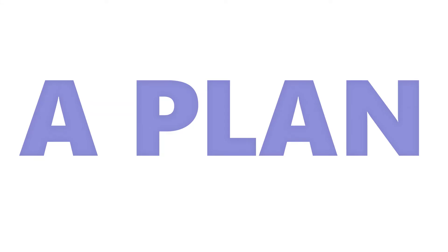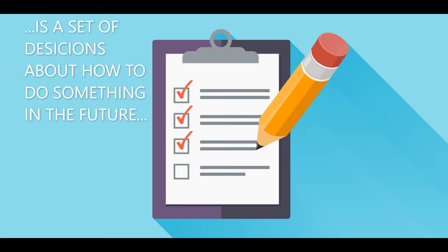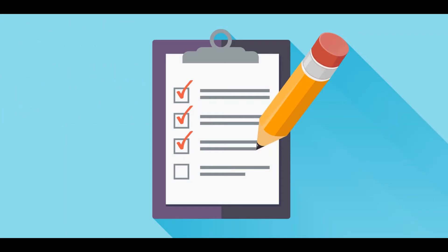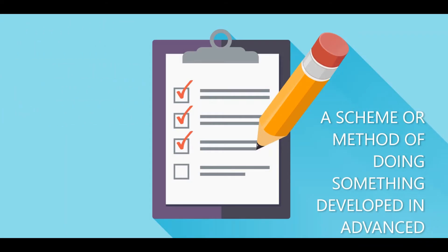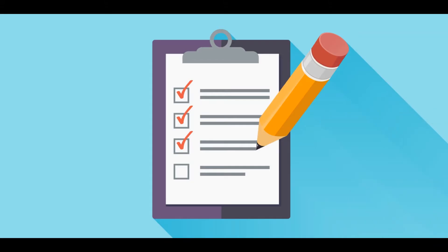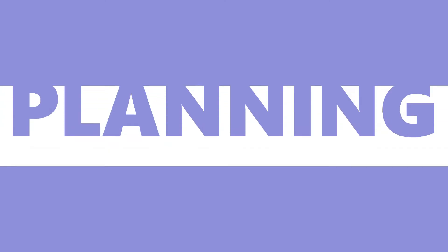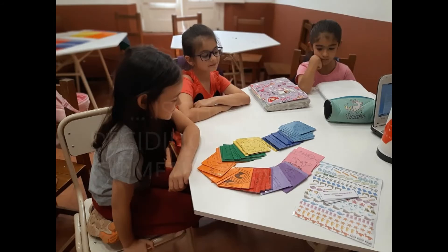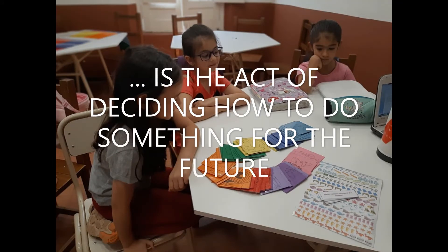Plan is a set of decisions about how to do something in the future — the scheme or method of doing something developed in advance. Planning is the act of deciding how to do something for the future.